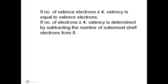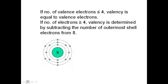Let us look at this with the help of the diagram. This is the electronic configuration of sulfur. This is the outermost shell of sulfur. In this we have 6 electrons in the outermost shell which are the valence electrons. 6 is greater than 4.